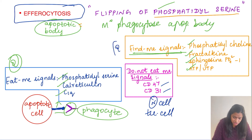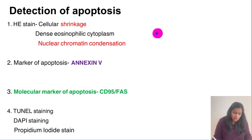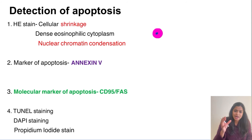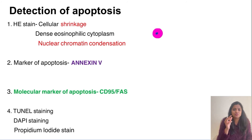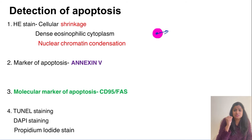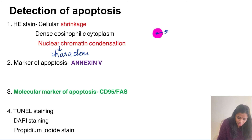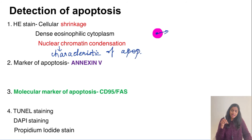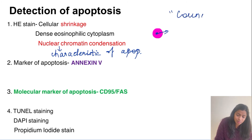How do we detect apoptosis? Microscopically on H&E section, we can see characteristic cellular shrinking, dense eosinophilic cytoplasm, and a condensed pyknotic nucleus. Nucleochromatin condensation is the characteristic of apoptosis, while caspase activation is the hallmark of apoptosis. In neurons, since they lack caspases, activation of apoptosis-inducing factor (AIF) is the hallmark of neuronal apoptosis.